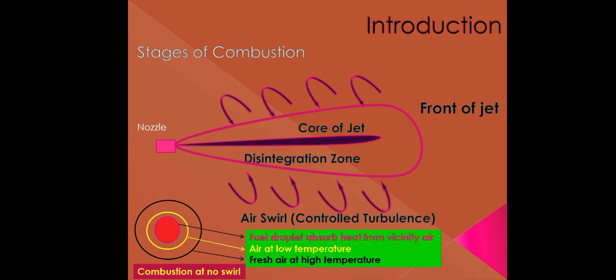Air swirl plays a very important role in the combustion of diesel fuel. Air swirl means a controlled turbulence of compressed air which helps to form a combustible mixture and complete ignition of all the fuel inside the cylinder. If there is no air swirl inside the cylinder, it decreases the air-fuel mixture quality, which leads to incomplete combustion.